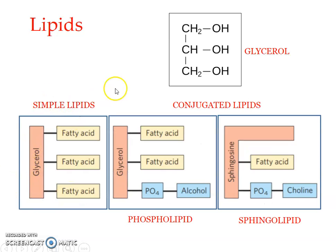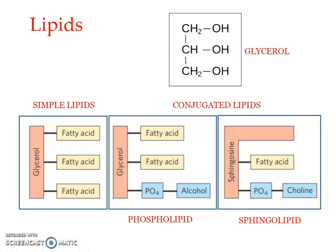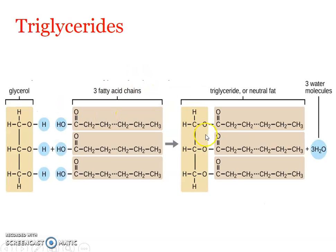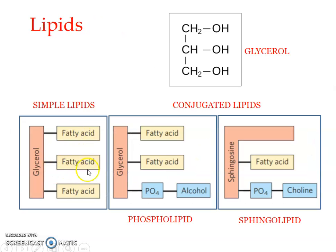Here we see the glycerol molecule — CH₂OH, CH₂OH, CH₂OH — with three alcohol groups prone to esterification with fatty acids. When all three alcohol groups are esterified with a fatty acid molecule each, we get a triglyceride. This is the simple lipid triglyceride, the neutral fat we already mentioned. The bond formed is an ester bond, represented as C-O-C.